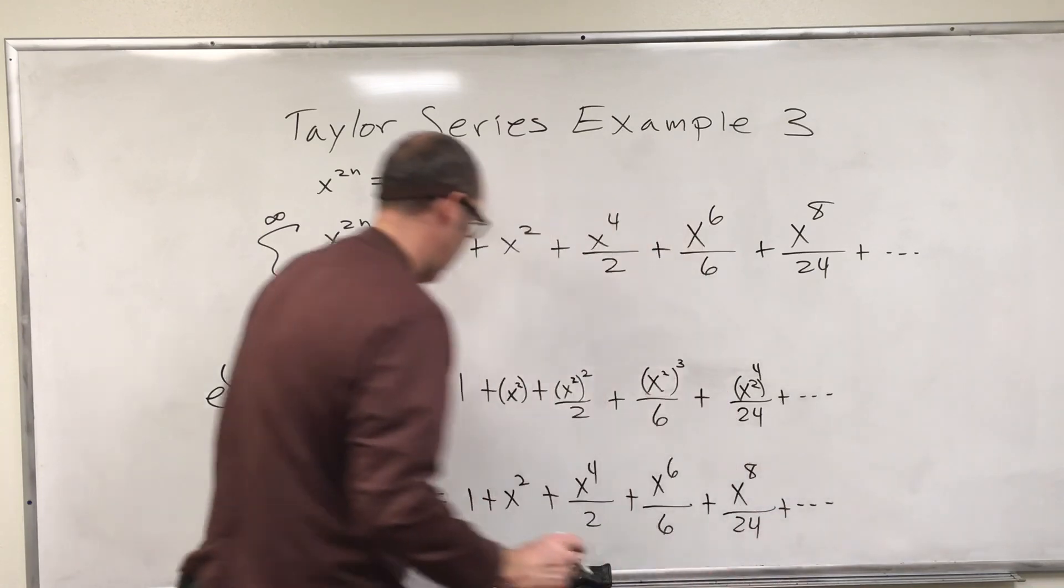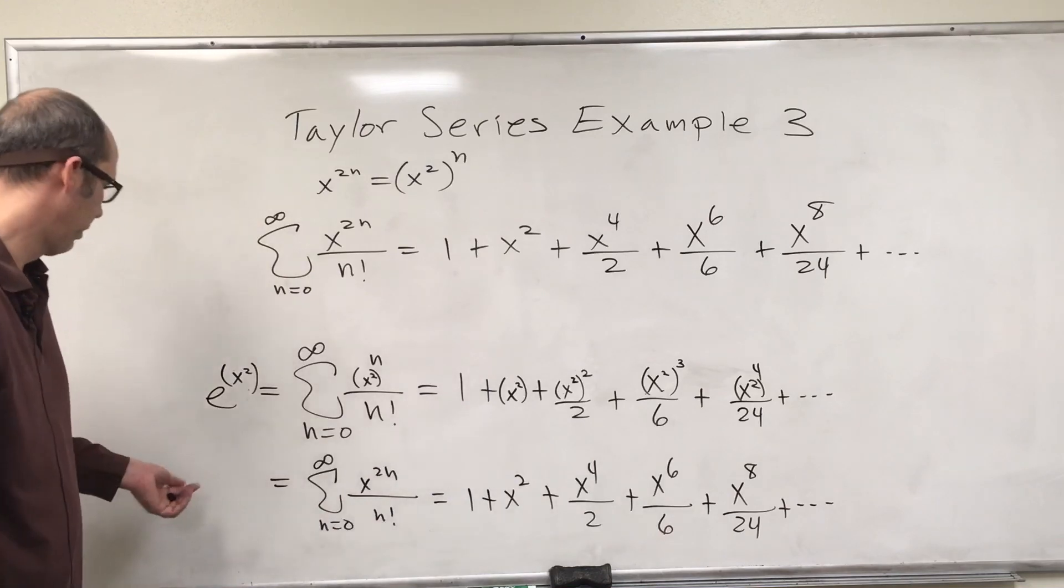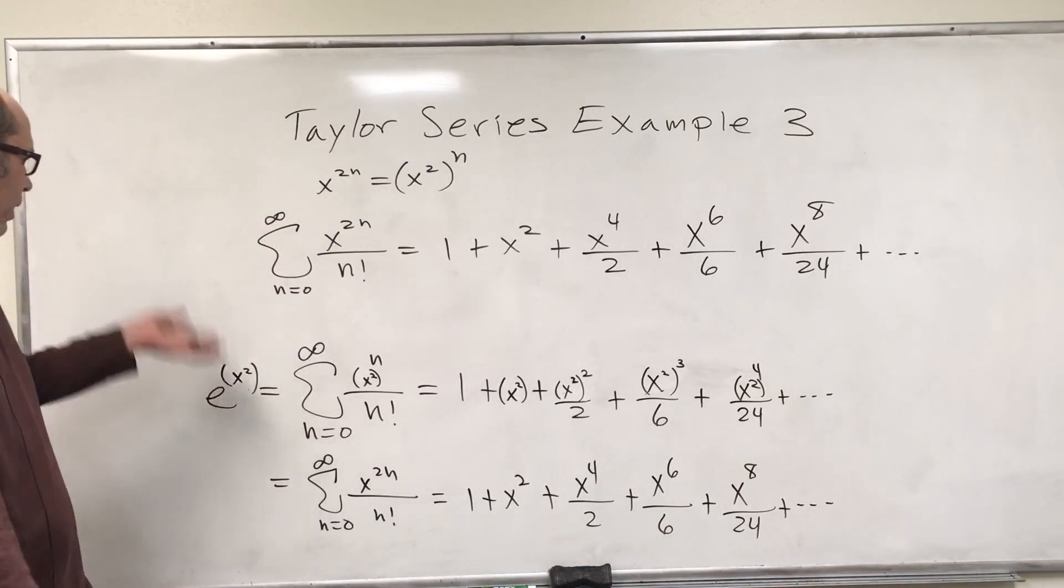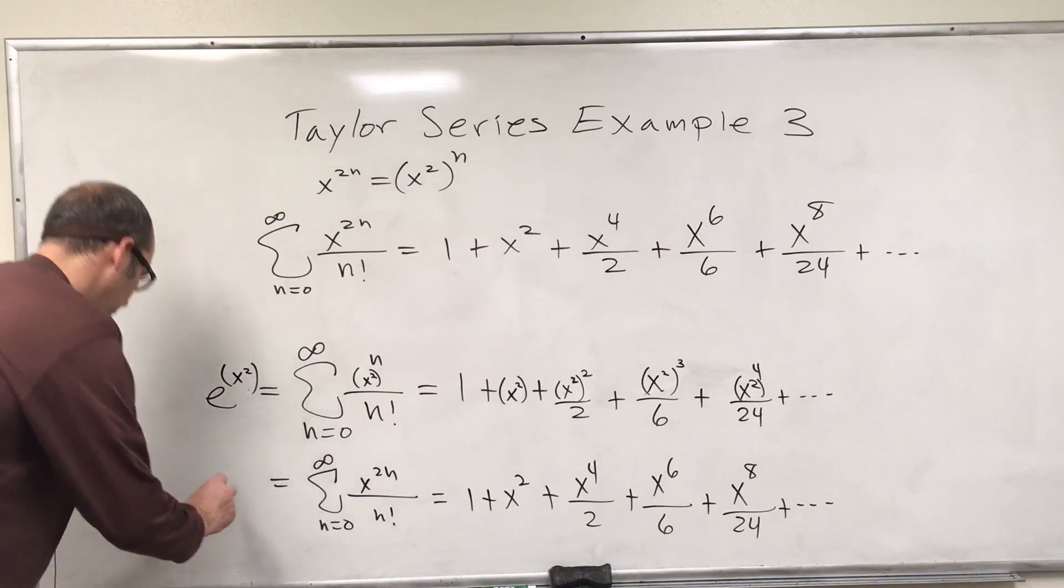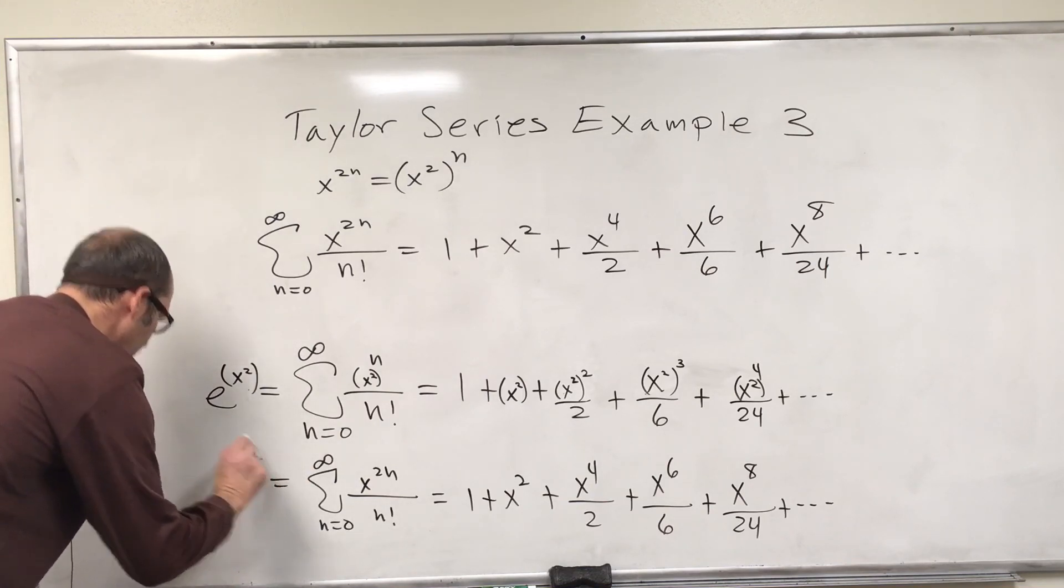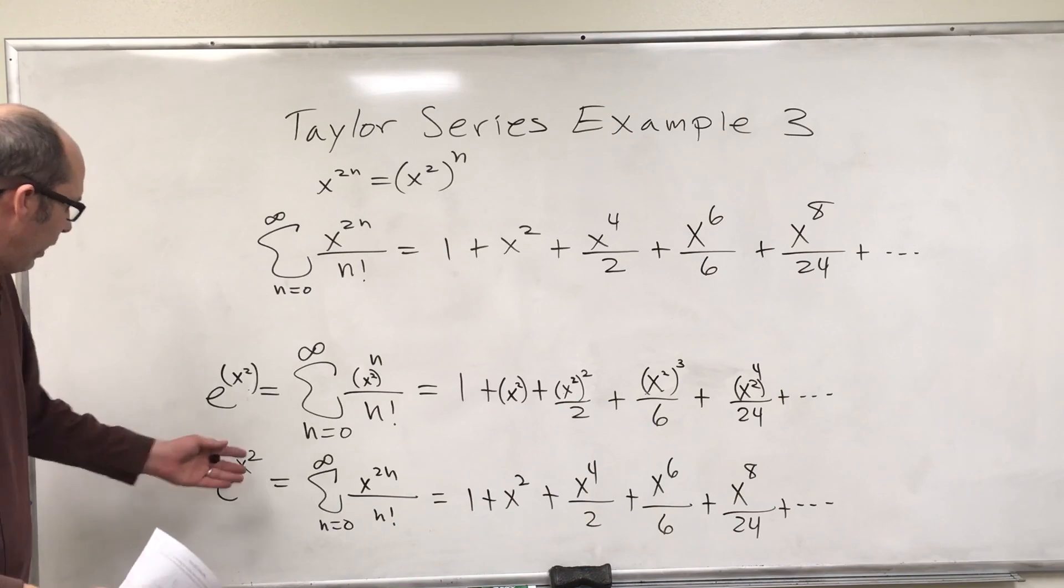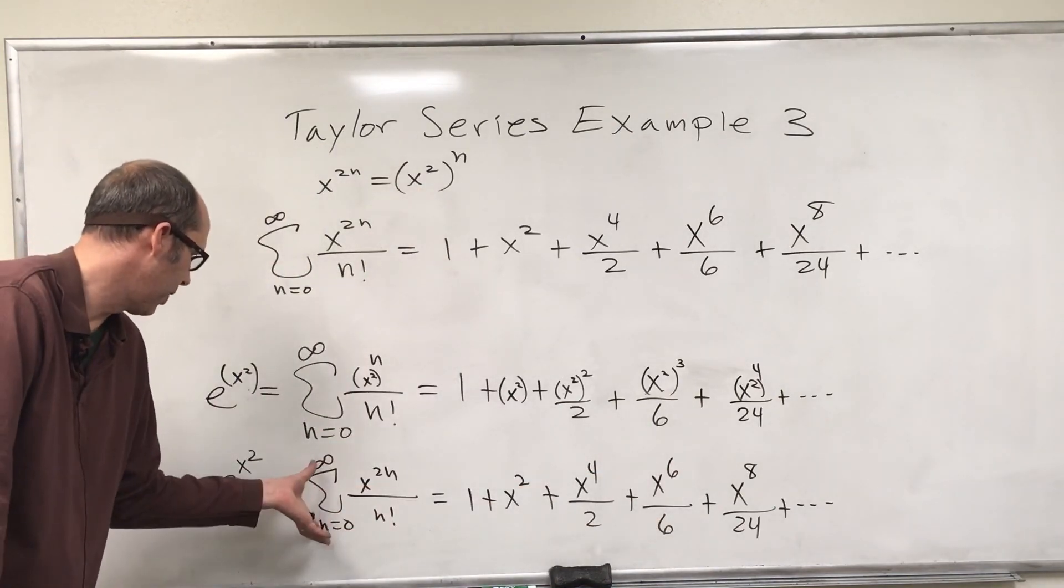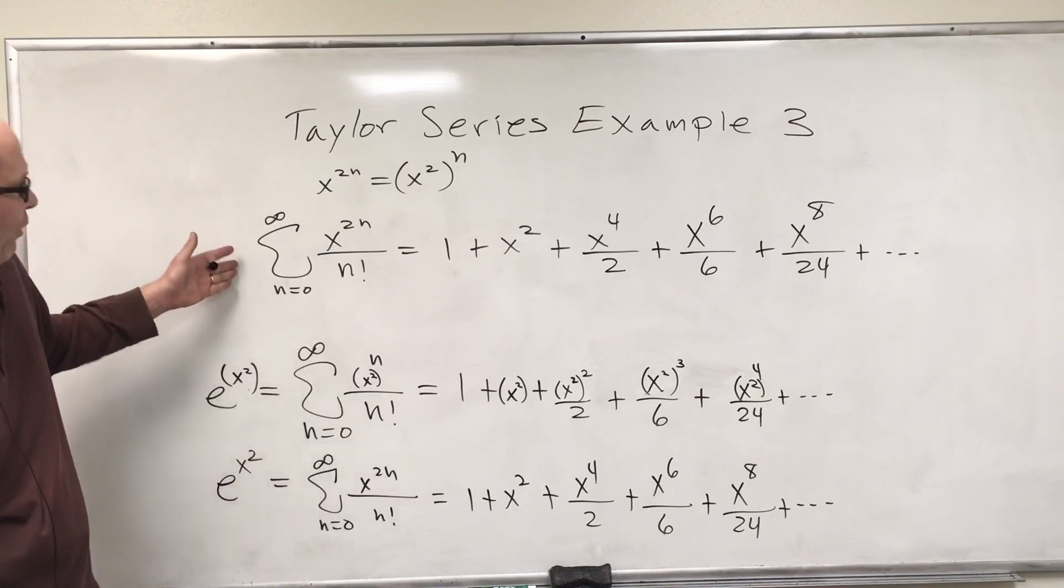By manipulating e to the x, by putting an x squared in for x, e to the x squared has this expansion. This is the way we write it using sigma notation. That's exactly what we found here.